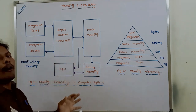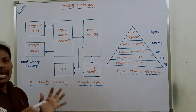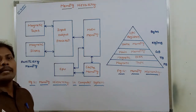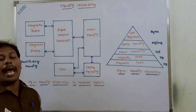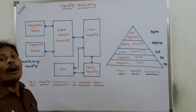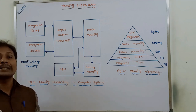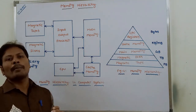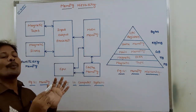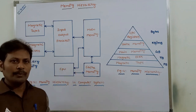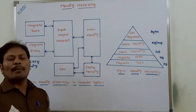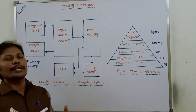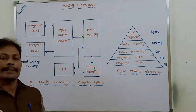What is the goal of memory hierarchy? The main goal of memory hierarchy is to obtain the highest possible average access speed while minimizing the cost of the entire memory system. In other words, we are reducing the cost of the memory while at the same time increasing the access speed.